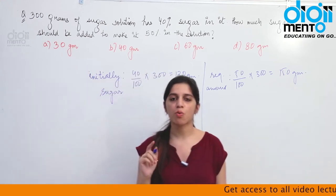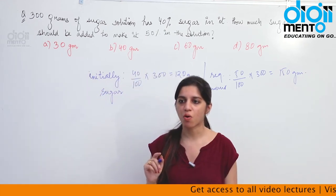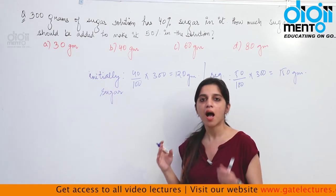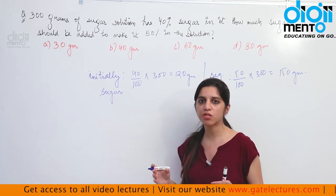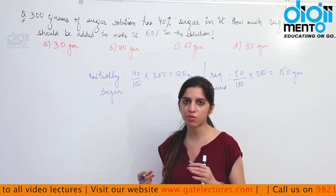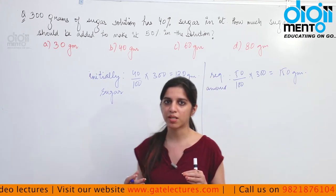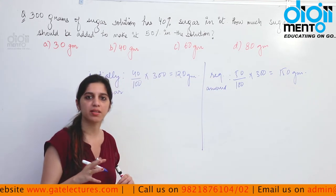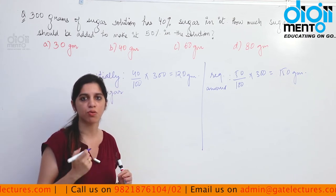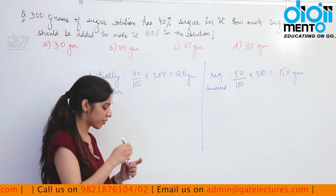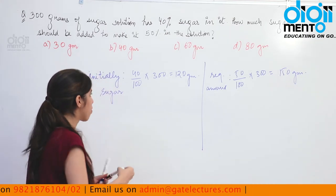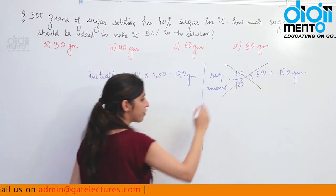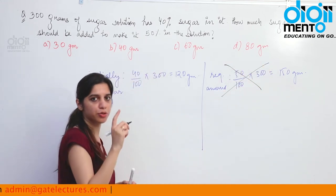This is wrong. Why is this wrong? Because when you add sugar to the solution, the total amount of solution is also going to increase. Not only the sugar increases — when you add one thing, the total amount of the solution also increases. That is why this approach is wrong. Do not do it like this.